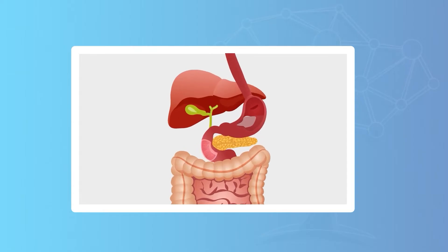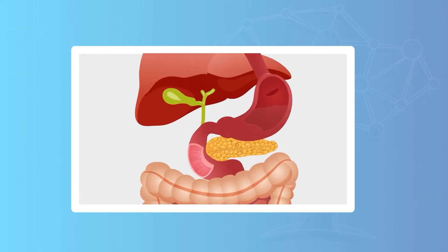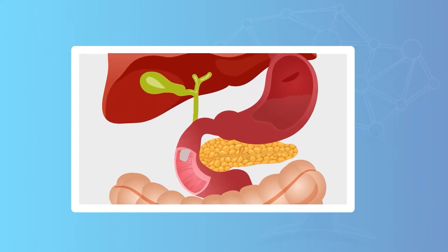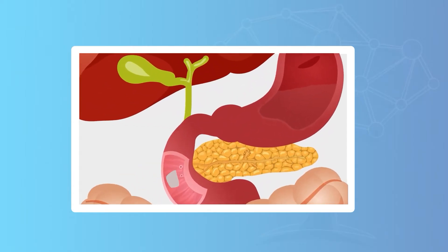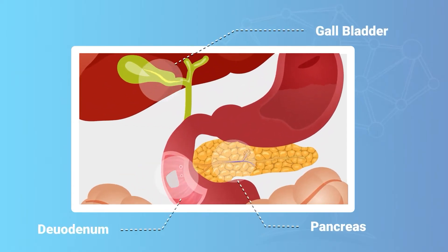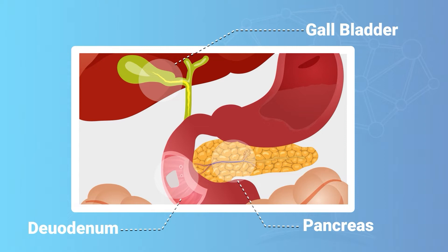The maximum fat digestion takes place in the duodenum. The gallbladder secretes bile to the duodenum to emulsify the fat, and the pancreas secretes the enzyme lipase.